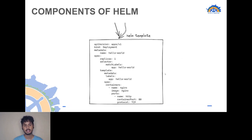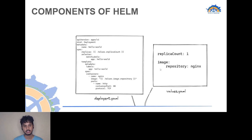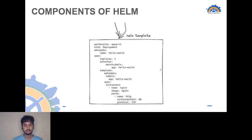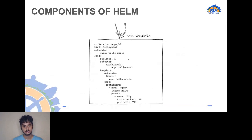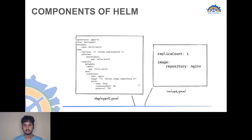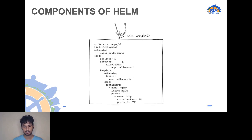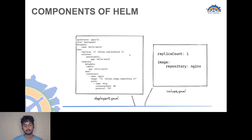The Helm template is created by combining those two files. Whenever you deploy a new release, you will see the values from values.yaml are substituted into the template. For example, the Nginx image is being used and the replica count is set to one. When you deploy the Helm chart, this becomes the final state used for deployment. If you change the replica count to two in values.yaml, the deployment will reflect two replicas — so you can update values.yaml without digging into the deployment.yaml.